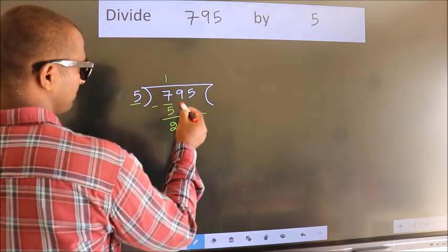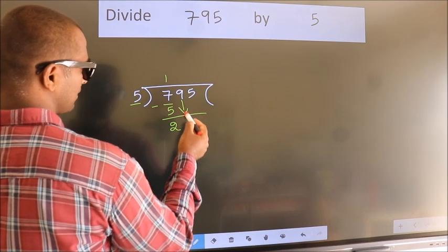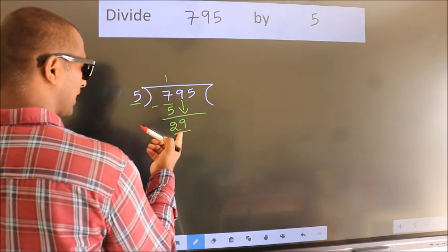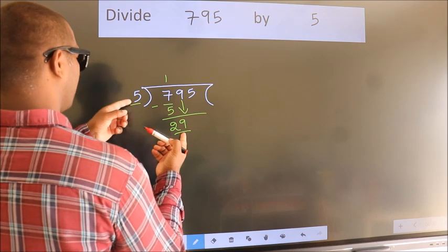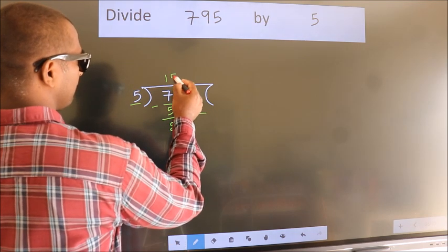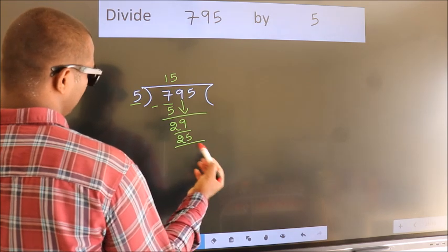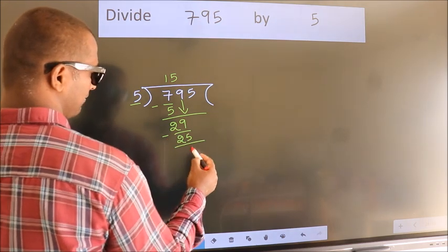After this, bring down the beside number. So 9 down. So 29. A number close to 29 in the 5 table is 5 fives 25. Now we subtract. We get 4.